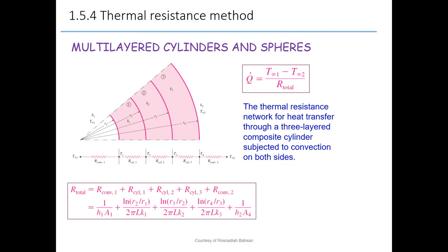Now we move to the multi-layer cylinder and sphere. For the sphere, it is similar — the only difference is that the area for the cylinder is 2πRL, while the area for the sphere uses a different equation. For a multi-layer cylinder, imagine a steam pipe: in order to keep the temperature for the steam, we insulate it with insulators — K1, K2, and K3 — three insulators covering the pipe.